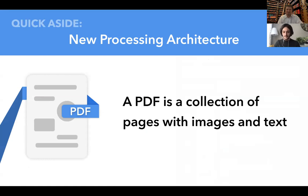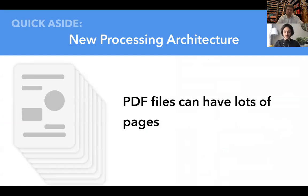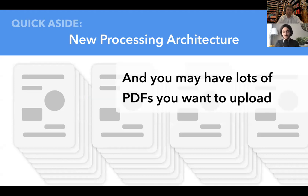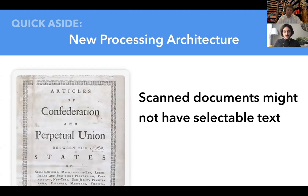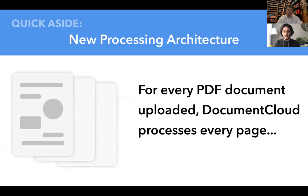For those of you who don't know what it means to process a document, I wanted to do a quick aside on the processing architecture. Most of you are probably familiar with PDF files — they're essentially collections of pages that have images and text on them. PDF files come in all shapes and forms. Some can have thousands of pages. Another challenge with processing is scanned documents. If you have a document that's just an image of text but it's not actually selectable, we go the extra mile to pull that text out.